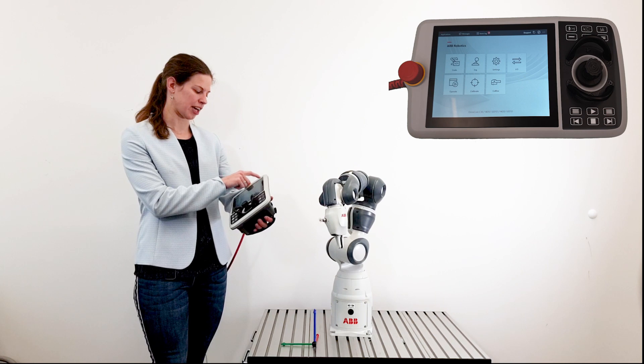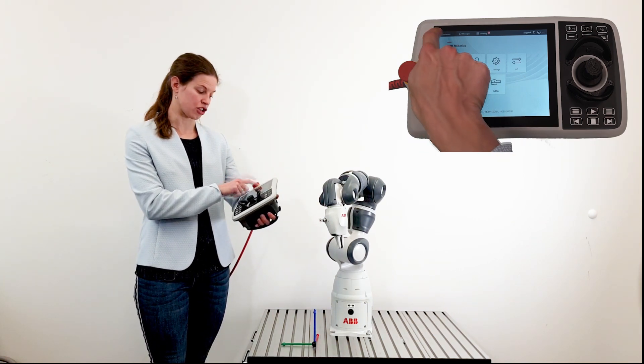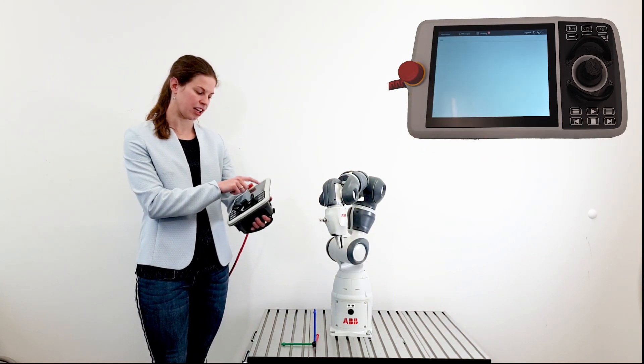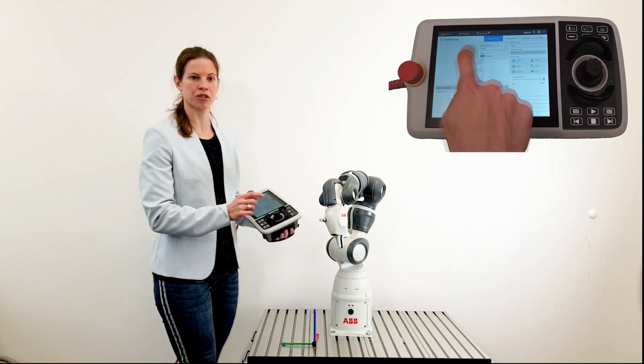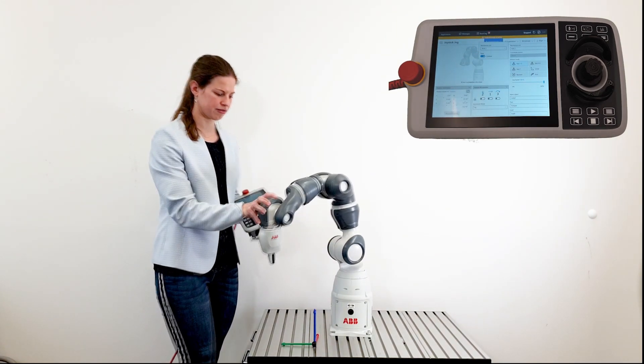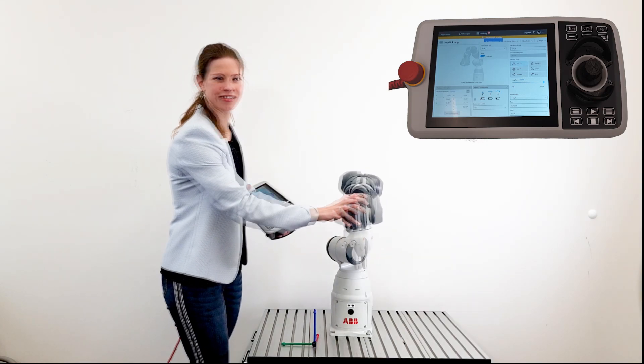On the flex panel you click applications, jog, lead through, enable lead through. Grab your robot and move it.